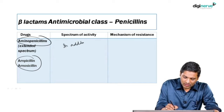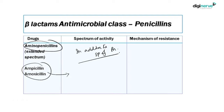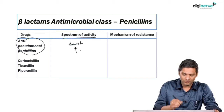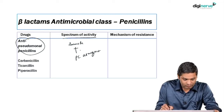The next class is aminopenicillins or extended-spectrum penicillins, like ampicillin and amoxicillin. In addition to the spectrum of the penicillin group, ampicillin and amoxicillin also act on Gram-negatives and they act better on Enterococcus. The next class is anti-pseudomonal penicillins, whose spectrum is like aminopenicillins plus they also act on Pseudomonas aeruginosa.